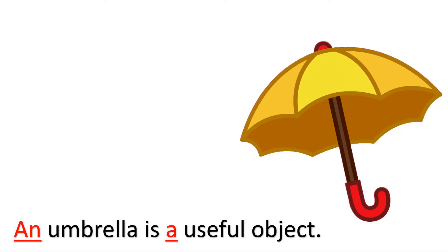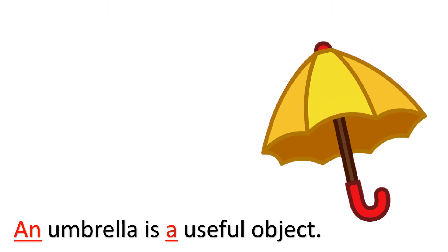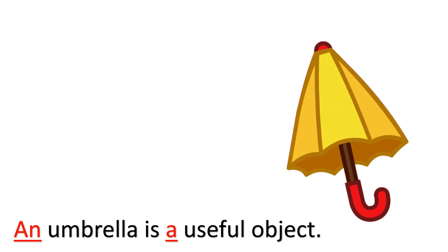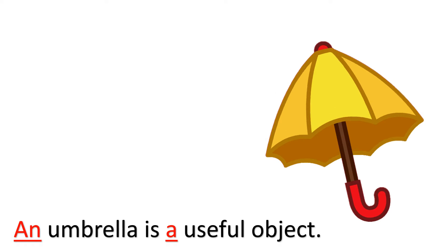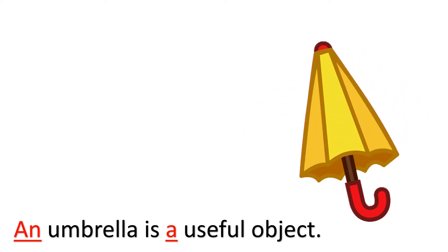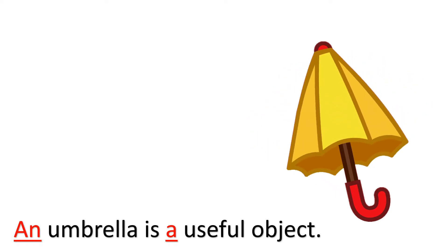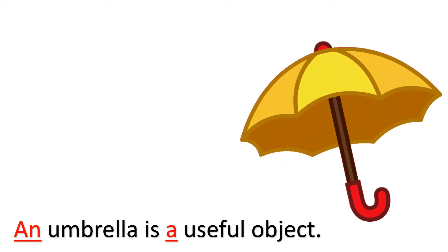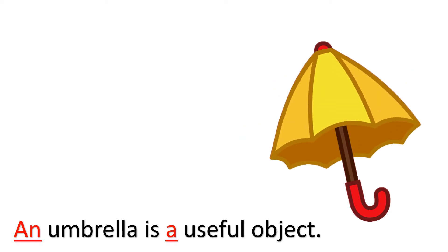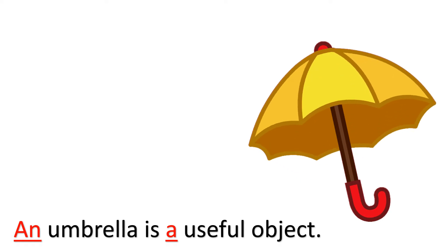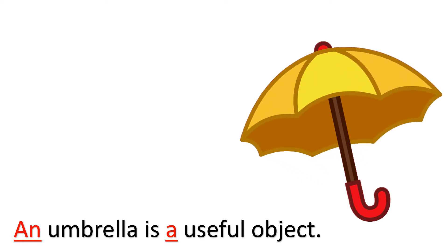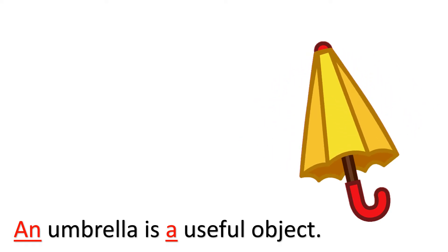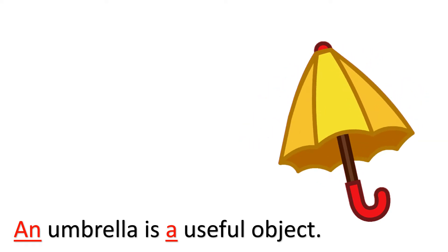'An umbrella is a useful object.' 'An' is used before 'umbrella' because the pronunciation of 'umbrella' starts with a vowel sound. And 'a' is used before 'useful' because the pronunciation of 'useful' starts with a consonant sound.